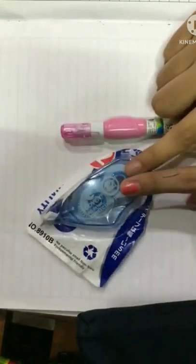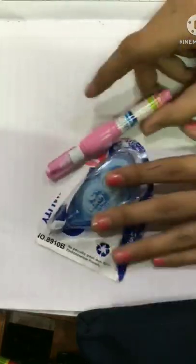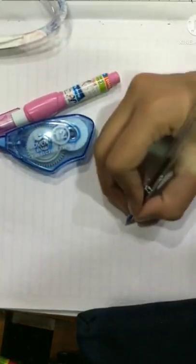Hi guys, welcome back to our new video. Today we are going to compare correction tape versus whitener. The correction tape costs 30 rupees and the whitener costs 15-20 rupees.